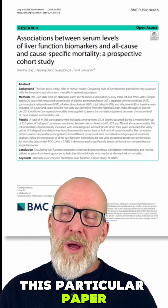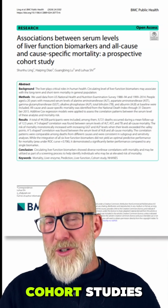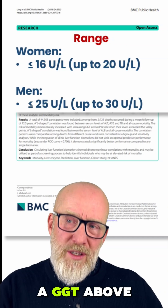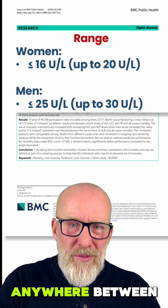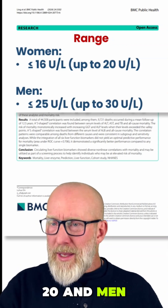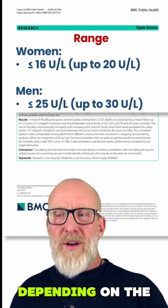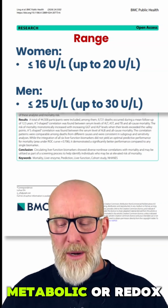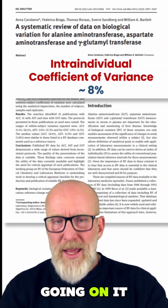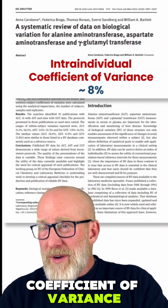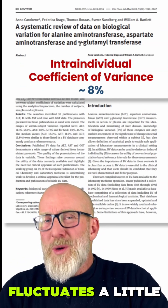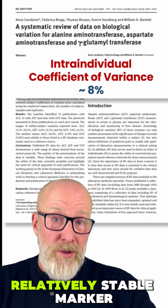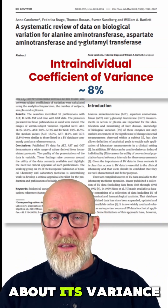One of many large cohort study papers suggests that when women have a GGT above anywhere between 16 to 20, and men anywhere between about 25 to 30 — depending on the paper — it might be pointing to some sort of metabolic or redox issue. GGT has an intra-individual coefficient of variance of only 8%, meaning it fluctuates a little but not too much to be concerned about, making it a relatively stable marker.